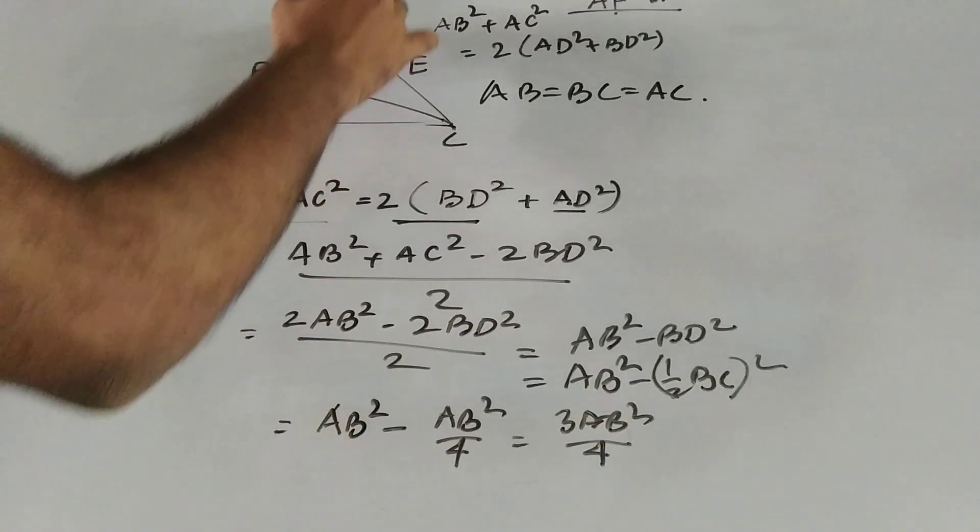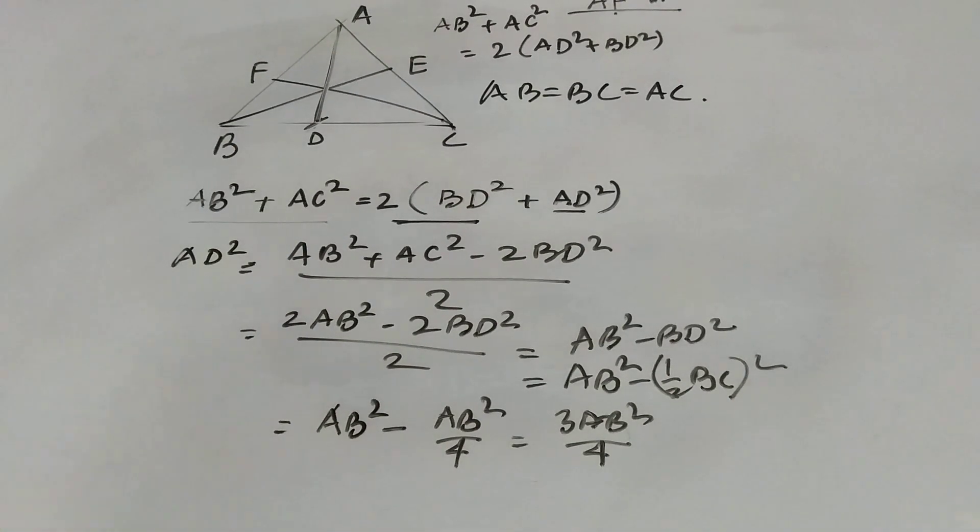This is the length of the median AD, AD square equal to 3 AB square by 4. This is a simple derivation.